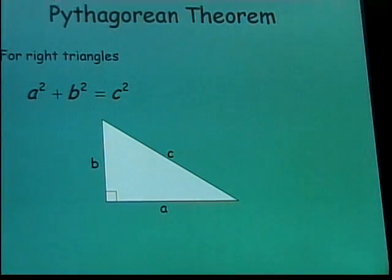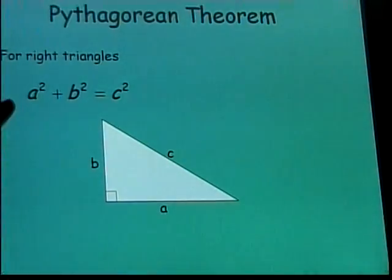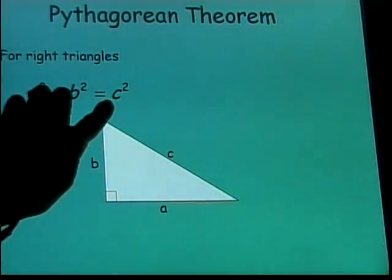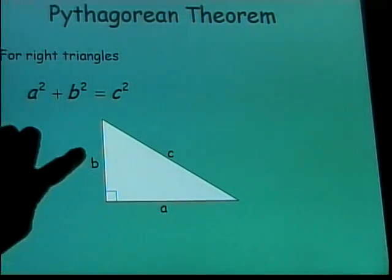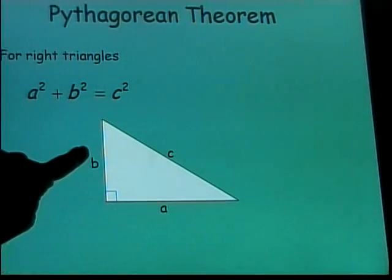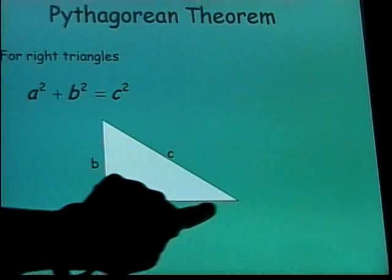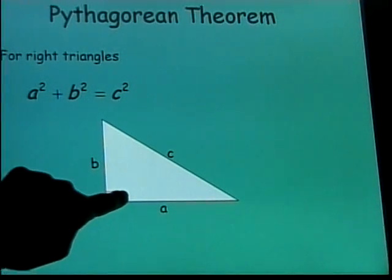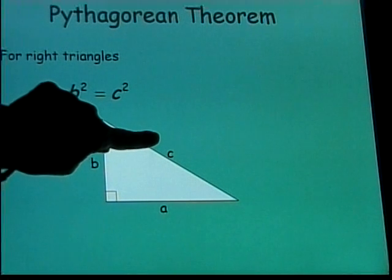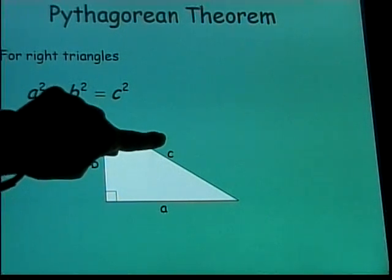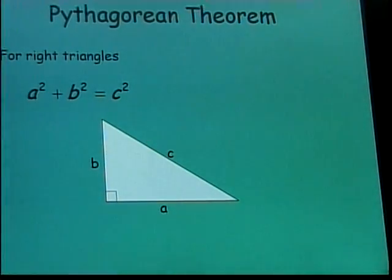Finally, we have the Pythagorean theorem, which only works for right triangles. The formula is a squared plus b squared equals c squared. A and b are the two legs that make up the right angle, and c is always opposite the right angle — it is the label for the hypotenuse, the side that does not form the right angle.